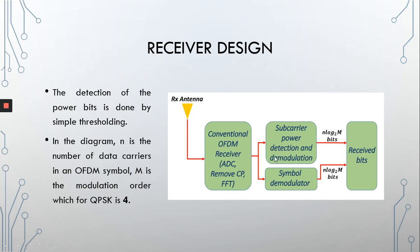One of them detects and demodulates the power bits, determining the power of the received subcarriers: a high-power subcarrier means a 1, and a low-power subcarrier means a 0. The bottom block is the symbol demodulator, which demodulates the QPSK symbols just as in conventional OFDM. By doing this, we receive twice the number of bits that would be received by conventional OFDM.